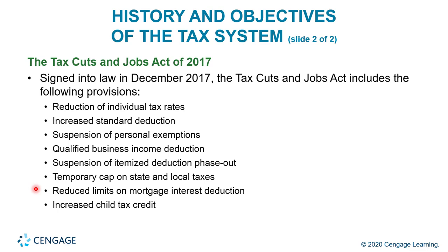The Tax Cuts and Jobs Act of 2017 was signed into law in December 2017 and includes the following provisions: a reduction of the individual tax rates, increased standard deduction, suspension of personal exemptions, qualified business income deduction, a suspension of itemized deduction phase out, temporary cap on state and local taxes, reduced limits on mortgage interest deductions, and increased child tax credit. It was the first major change to the tax system in a very long time.